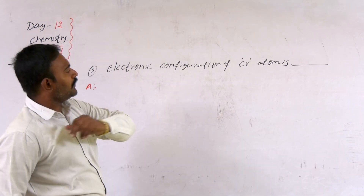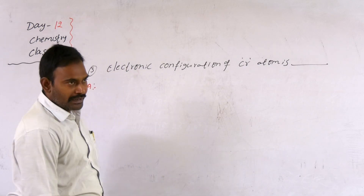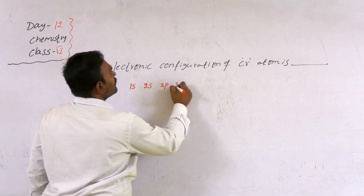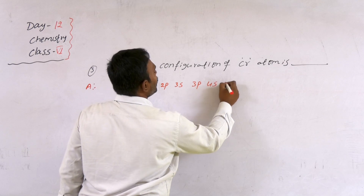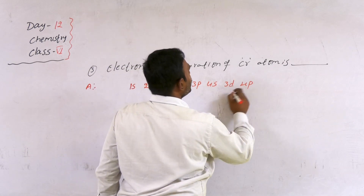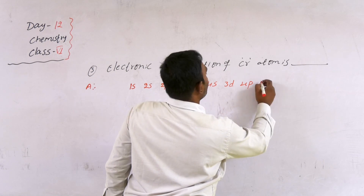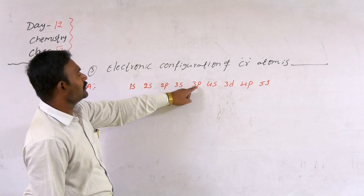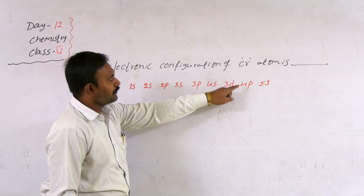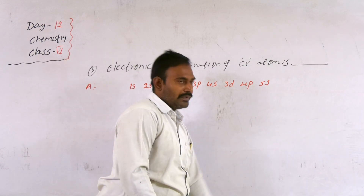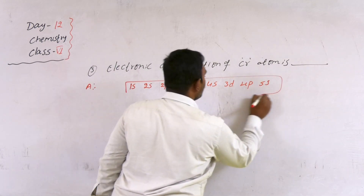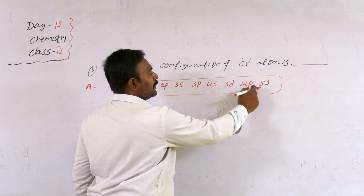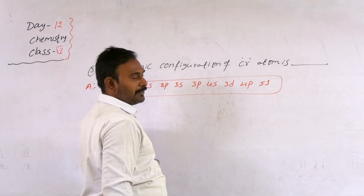The electronic configuration of chromium. Using our sequence — 1s, 2s, 2p, 3s, 3p, 4s, 3d, 4p, 5s — we fill the electrons. The trick to remember the sequence is: school, school, public school, public school, then Daring Public School — nothing but our Narayana Public School.